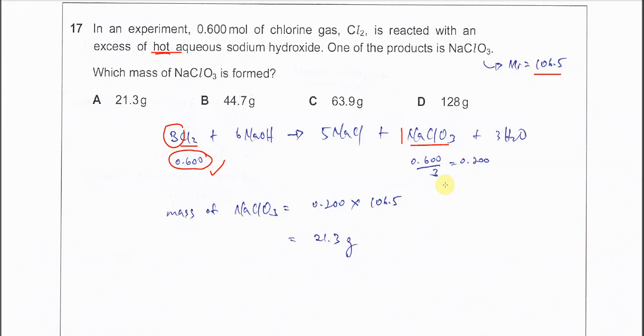And find the mole of sodium chlorate that forms. Because it's 3 to 1 mole ratio, the sodium chlorate should be 3 times lesser than the chlorine.